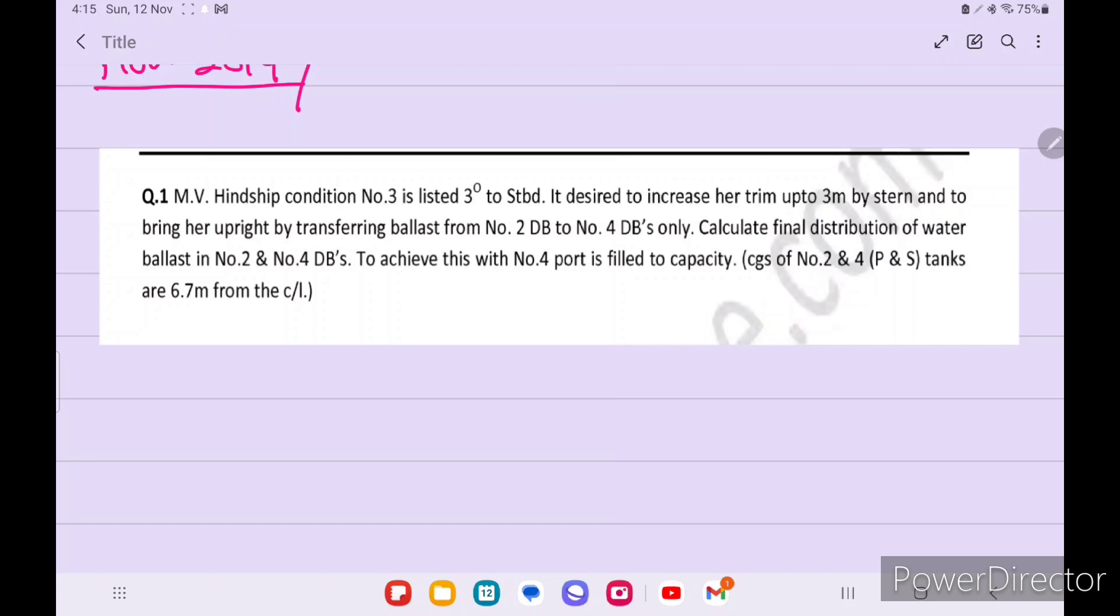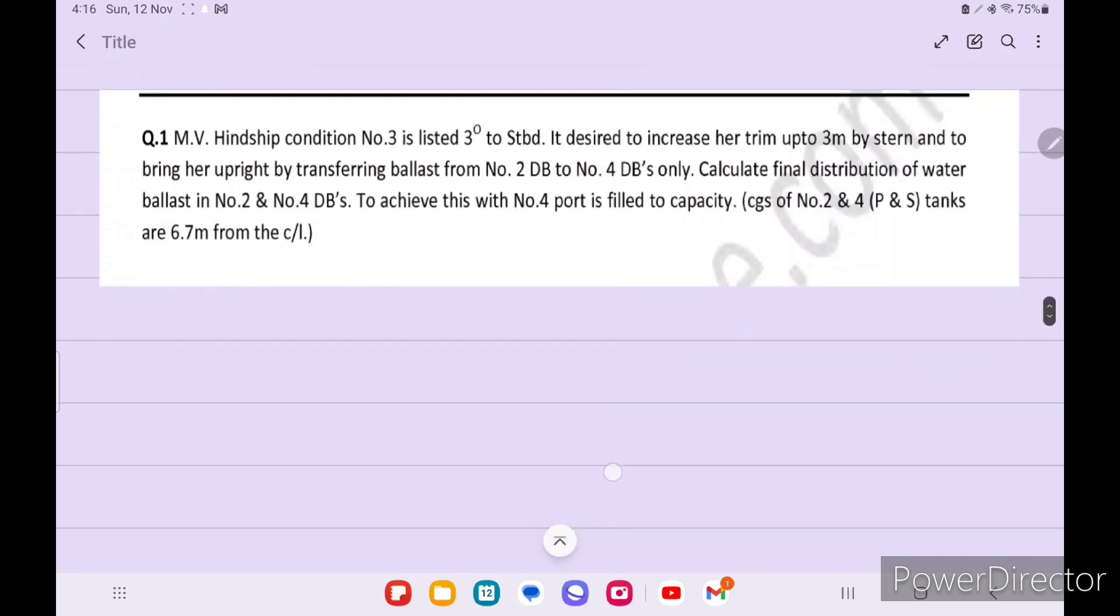Calculate final distribution of water ballast in No. 2 and No. 4 dBs. To achieve this, No. 4 port is filled to capacity. Centre of gravity of No. 2 and No. 4 port and starboard tanks are 6.7m from the centre line. So let's solve this.